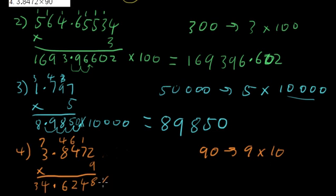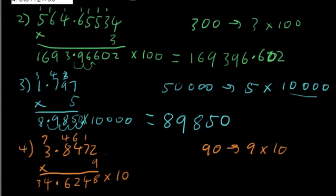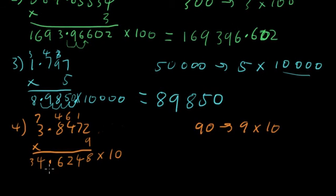We then need to multiply it by 10. So to do that, we're going to just shift this decimal place one place to the right and we will have 346.248. And that's it.